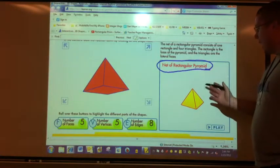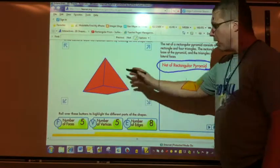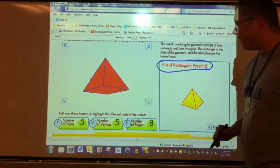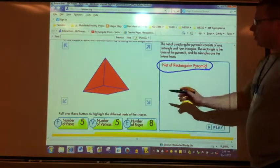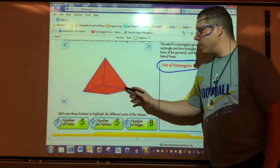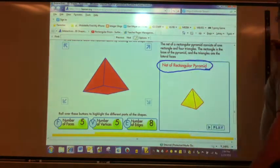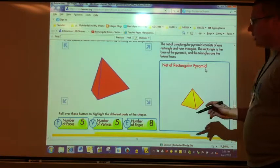So we're taking a look at what its net is going to be, as well as number of faces, number of vertices, and number of edges. You'll notice the bottom is a square or rectangular shape, and you have four triangle sides. So let's take a look at it.